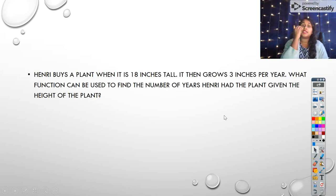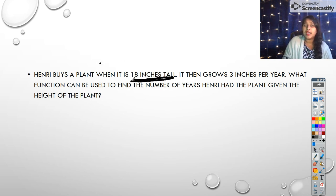Henry buys a plant when it is 18 inches tall. It then grows 3 inches per year. What function can be used to find the number of years Henry had the plant given the height of the plant? Well, okay, so this is literally asking you to look at a word problem and pull out the equation. That's what it says. That's what it means when it says what function can be used. It's saying what's my equation basically. So the important information here is that its original height is 18 inches and it grows 3 inches per year. That's literally all I need.